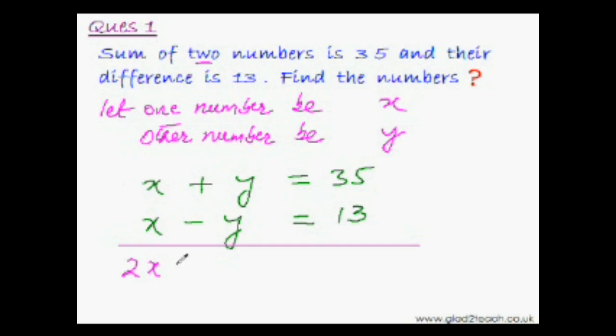x plus x is 2x and this cancels out. And 35 plus 13 would be 48. That means x would be equal to 48 divided by 2. That is 24.